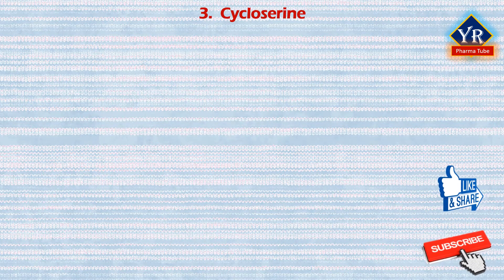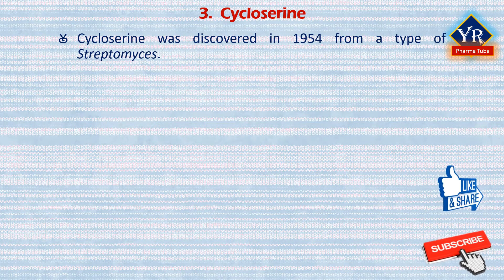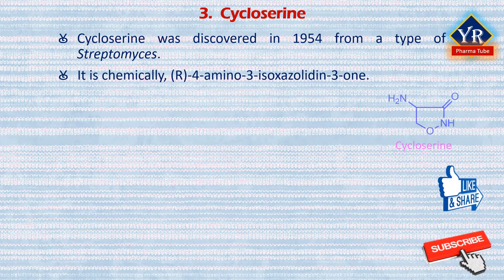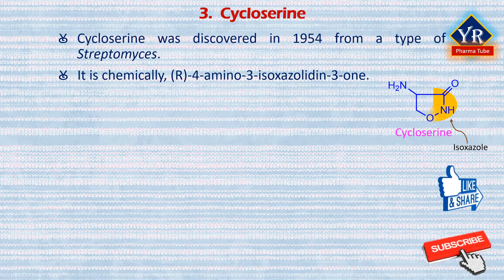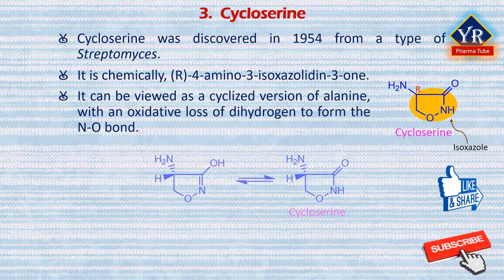The last drug of this lesson is cycloserine. Cycloserine was discovered in 1954 from a type of streptomyces. It is chemically 4-amino-3-isoxazolidinone. It is a simple structure consisting of a chiral center which has R configuration. It can be viewed as a cyclized version of serine with an oxidative loss of dihydrogen to form the nitrogen-oxygen bond. It exists in equilibrium with its tautomeric enol form.